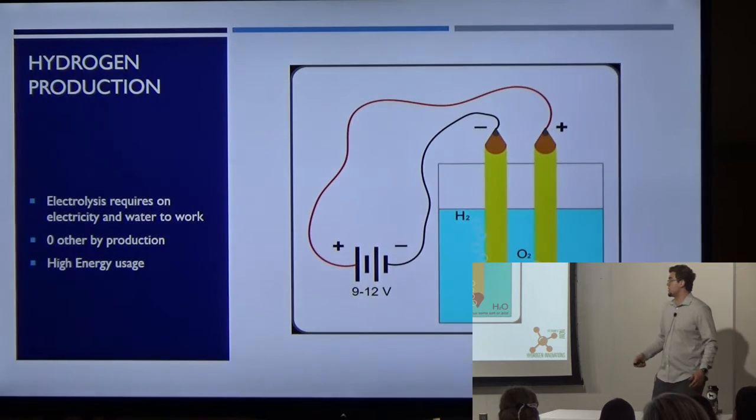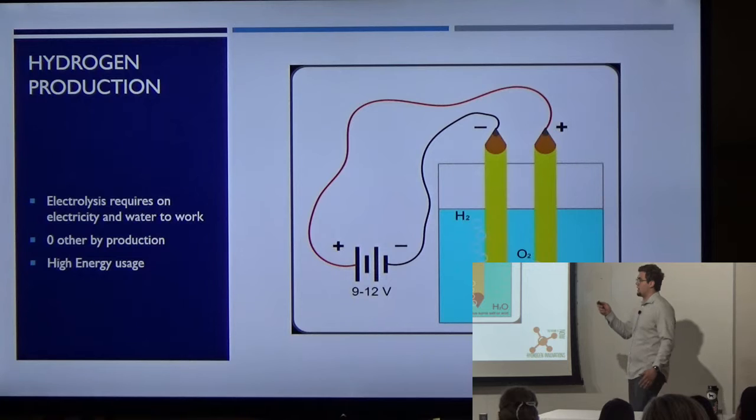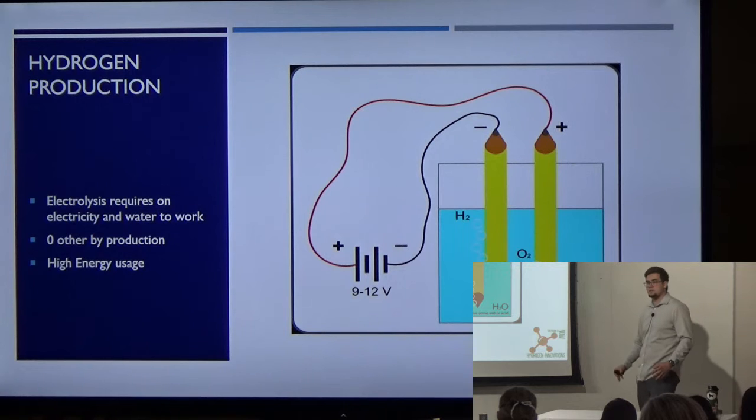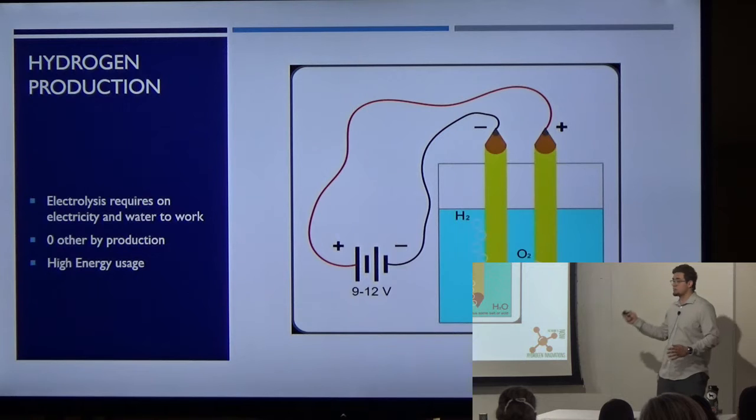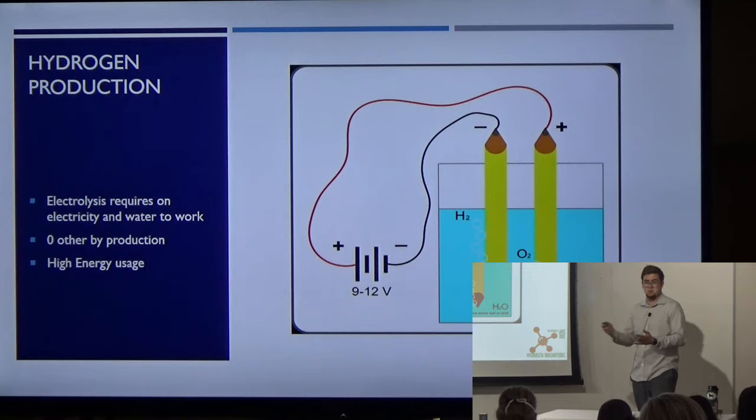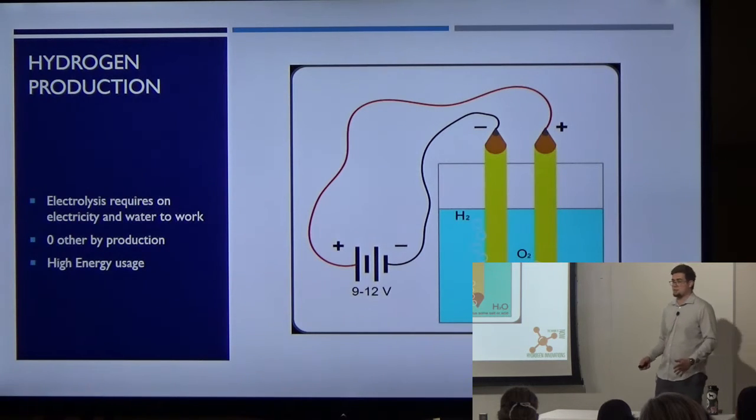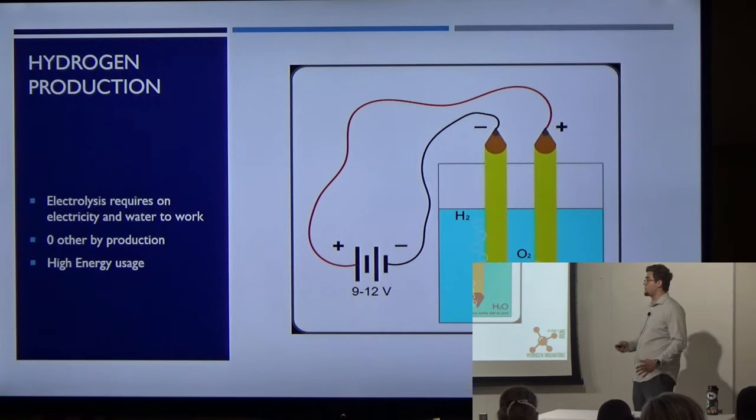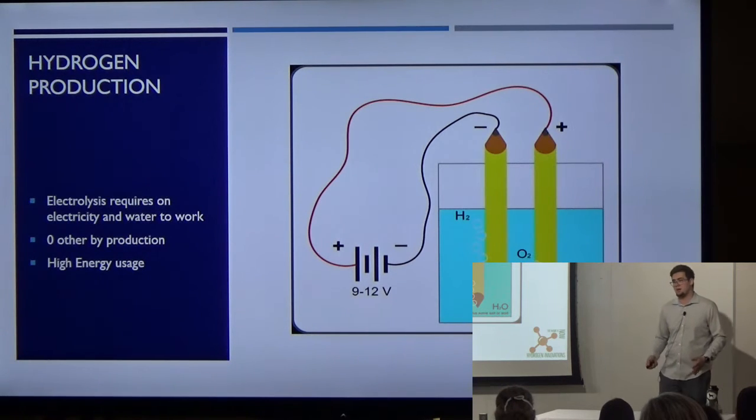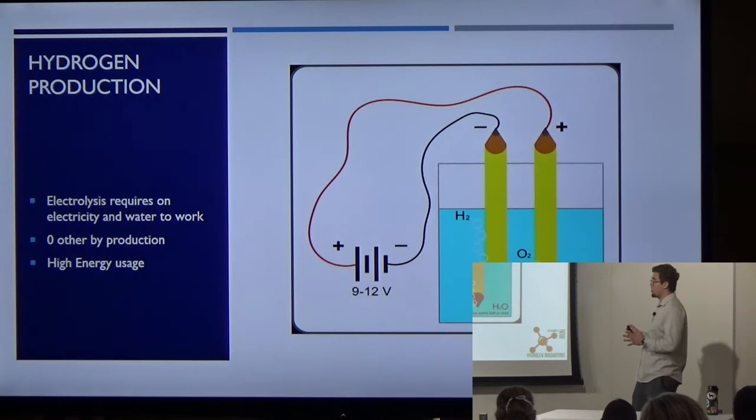Hydrogen production is also another really relatively simple thing. Electrolysis requires electricity and water to work. You take your anode and your cathode, you submerge them in water, put a little bit of salt in there to increase your conductivity, and run power through that. One side will produce hydrogen, one side will produce oxygen. You get about double the hydrogen, you get oxygen, which is H2O. There's zero other byproducts of this process. It's only water and oxygen. However, it does have a high energy usage, meaning across the system, you do have carbon usage if you don't have a completely clean energy system.